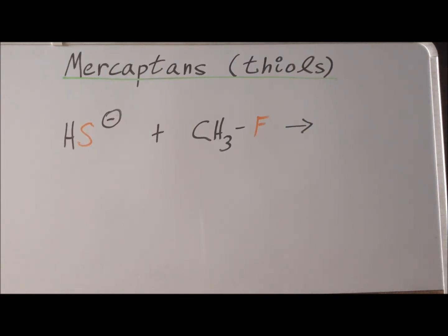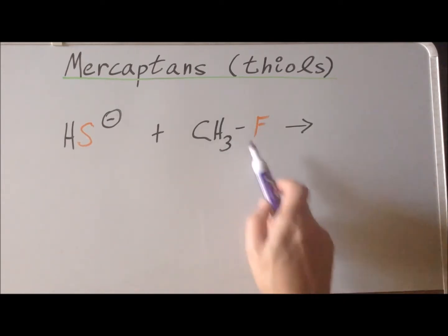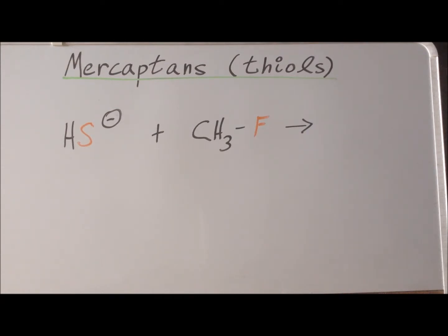Now we are ready to look at some specific examples of reactions. In our first case, we're going to have a nucleophilic attack of SH minus on a halomethane — in this case, fluoromethane. In reality we would not do this because fluorine is such a bad leaving group. One of the huge advantages of computational chemistry is that we can calculate reactions that would not be practical in the laboratory, to show exactly why they're not so practical. Let's see what happens and then discuss why we are using the example of fluoromethane.